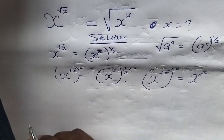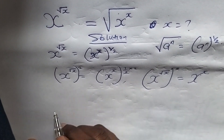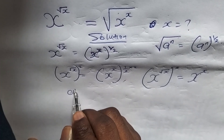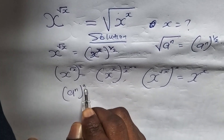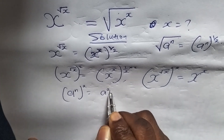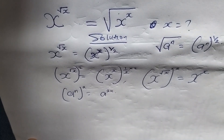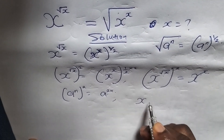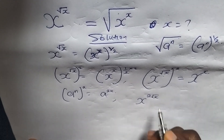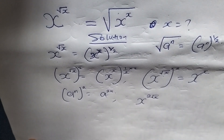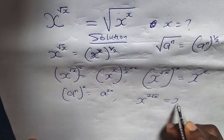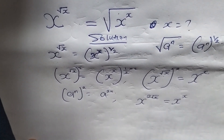So if we put in this from the principle of indices again, which says if we are having a to n, to the power of 2, is also equals to a to the power of 2n. So if we apply this rule here, we can simply write this to be x to the power of 2 root x is equals to x to the power of x.